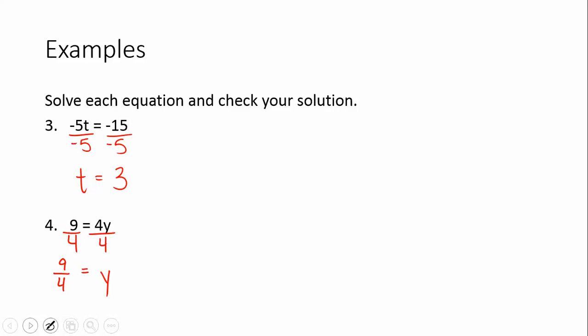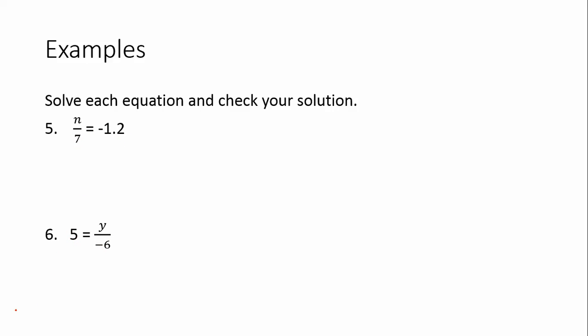Hopefully you got both of those right, and if you didn't, you can see where you went wrong. Now let's look at some with division. We have N divided by 7 equals negative 1.2. Remember, we always want to undo what's being done to the variable. Right now it's being divided by 7. The opposite of division is multiplication, so we need to multiply both sides by 7. Those 7's cancel, and we get N equals negative 1.2 times 7, which is negative 8.4.